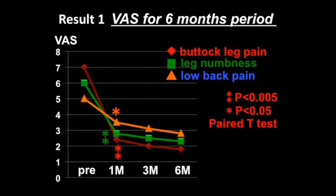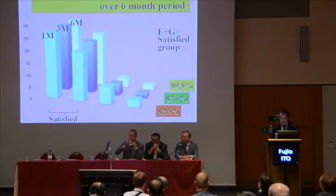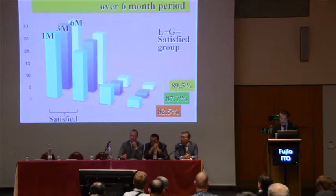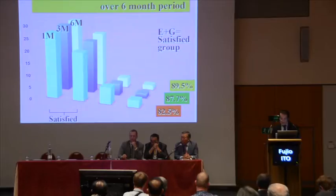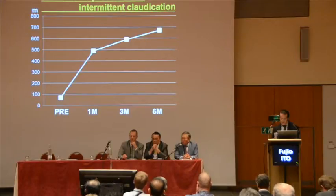All three pain factors decreased promptly after operation with significant statistics. The first operation results were satisfactory, graded excellent and good in 82.5% of all cases. Revision operations were done for six cases within three months, and four cases were satisfactory after revision. Three-month evaluation results were satisfactory in 87.7%, and six-month results in 89.5%. JOA scores increased immediately after operation. Burst of leg numbness decreased. Intermittent claudication changed from 55 meters pre-op to 500 meters one month after operation, and gradually increased over the next five months.